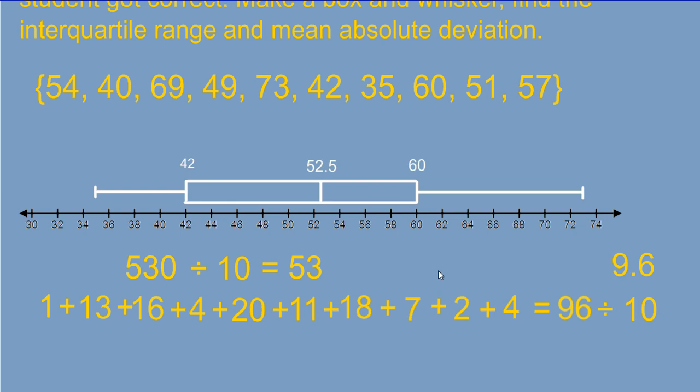And again, this is just another measure of spread. The lower this number is, that means that your data is a lot closer together. And the farther, or the higher this number is, the farther apart, or the more spread out your data is. Well, I hope this helped you to better understand box and whisker plots, interquartile range, as well as the mean absolute deviation. See ya!